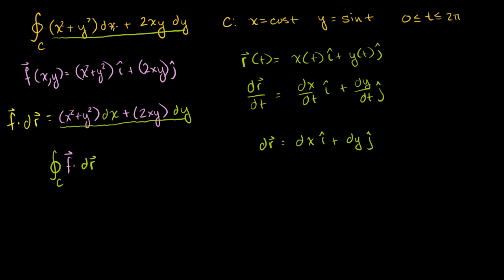Now that you've seen it, in the future if you see this differential form, you'll immediately know there's a vector field whose x component is one term and y component is the other, dotted with dr. Now let's ask ourselves: is F conservative? Is F equal to the gradient of some scalar field capital F? If we can show it is, then any line integral over a closed curve of F equals 0, and we'd be done — no need to deal with cosines and sines.